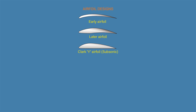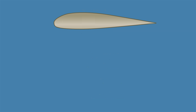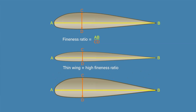The shape of the airfoil determines the amount of turbulence or skin friction that it produces, consequently affecting the efficiency of the wing. Turbulence and skin friction are controlled mainly by the fineness ratio, which is defined as the ratio of the chord of the airfoil to the maximum thickness. A high fineness ratio means a very thin wing; a low fineness ratio means a thick wing. A thin wing produces large skin friction, while a thick wing produces large turbulence. The best wing is a compromise between these two extremes.